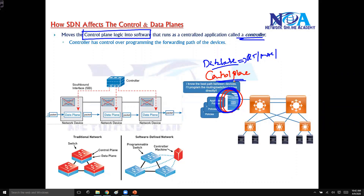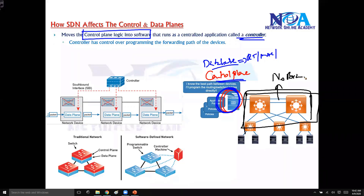We are moving the control plane logic into the controller, which means that your actual networking devices are just like having no control plane — no brain at all. So what they do is they just forward. They will be doing the normal job of the data plane, which is forwarding, but they have no or very limited mechanism to actually learn information.